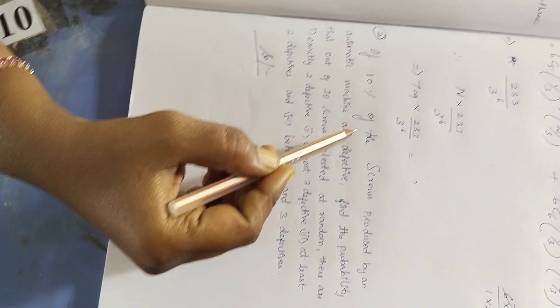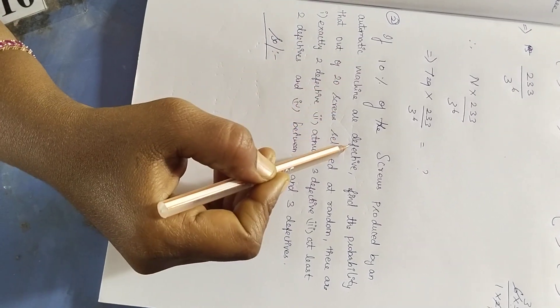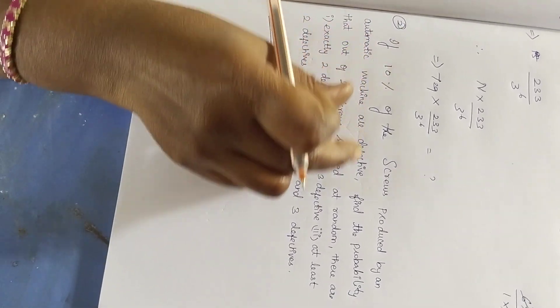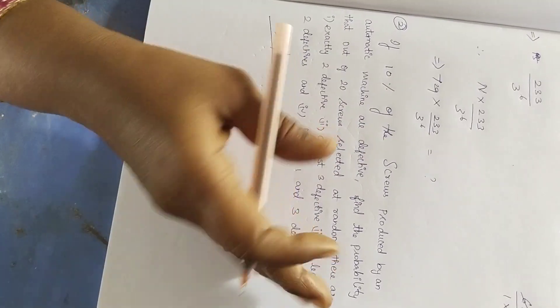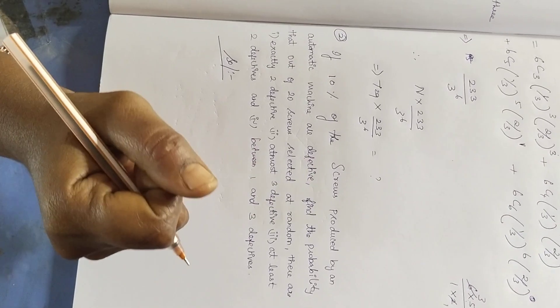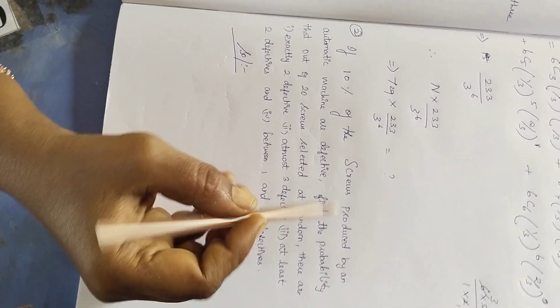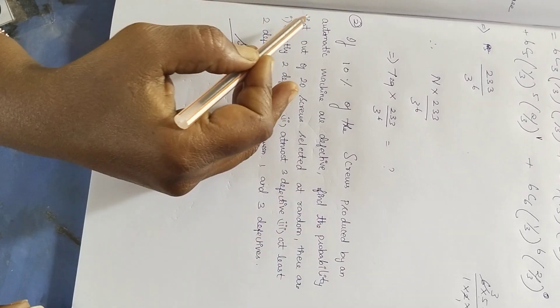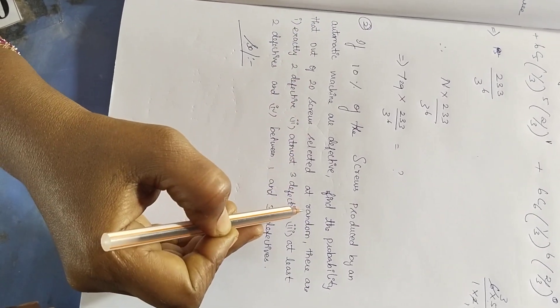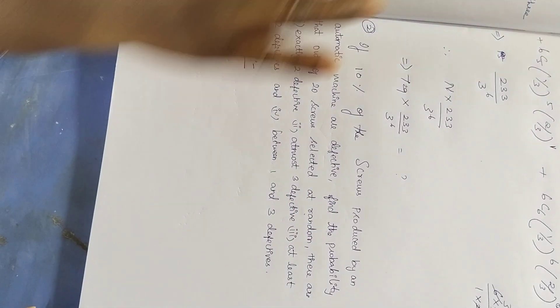If 10% of the screws produced by an automatic measure are defective, find the probability that out of 20 screws selected at random. How do you do that? 20 screws are selected at random.